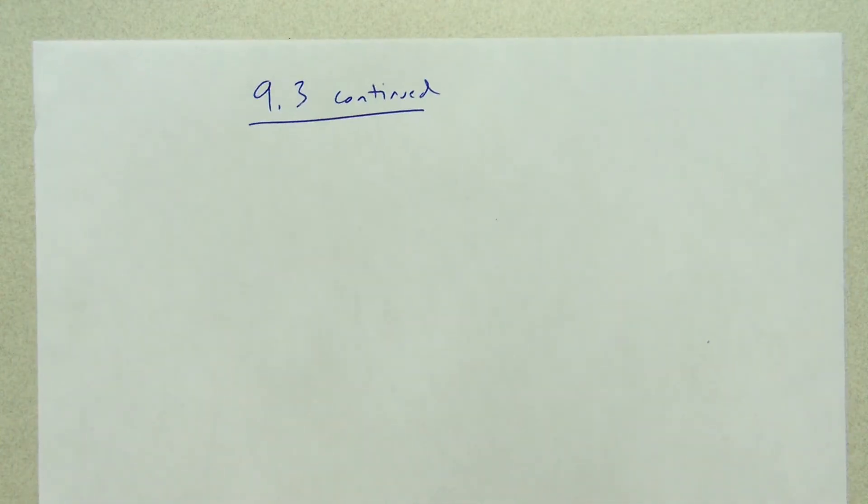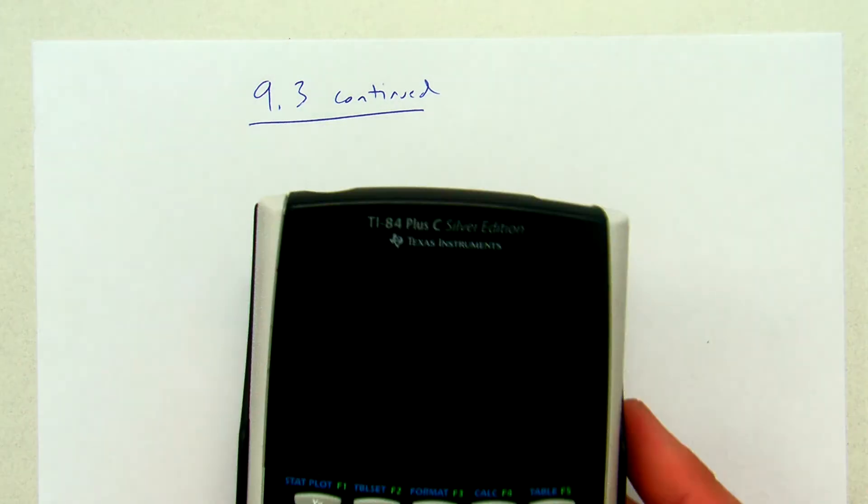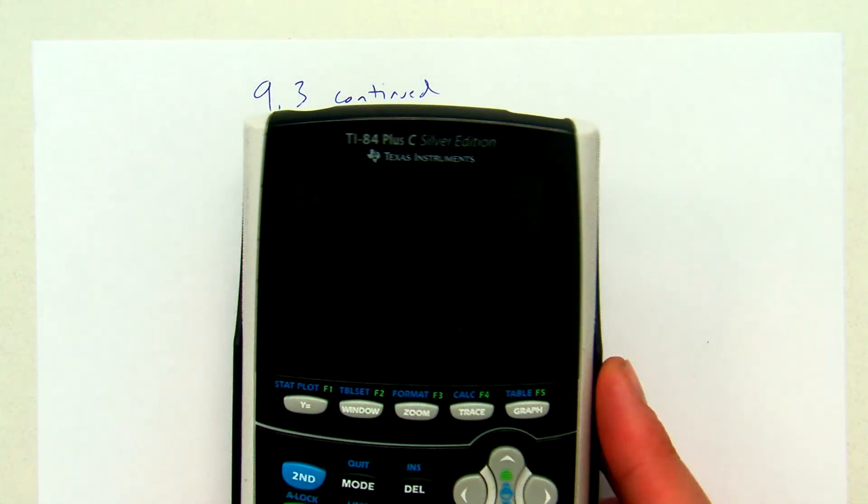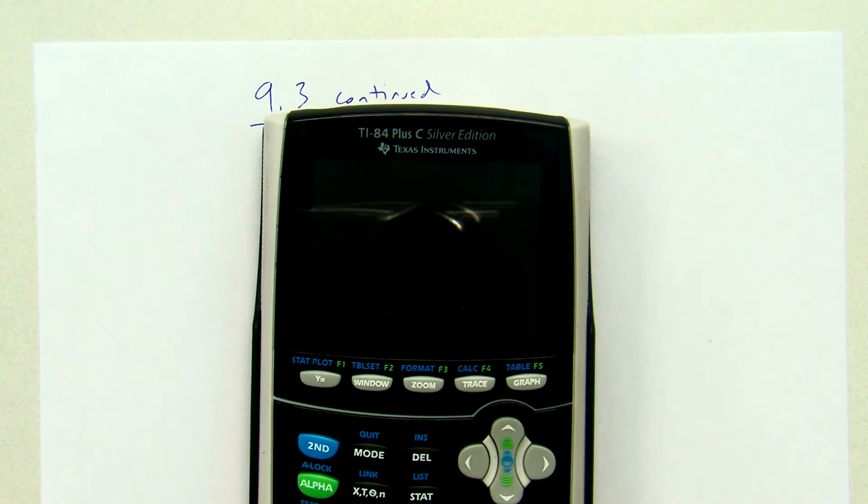This next video is going to be a little bit shorter and a little bit easier. We're going to be practicing using inverse trig functions on our calculator. We can only do inverse trig problems without a calculator if the number we're being given happens to be from a special right triangle like a 30-60-90 or a 45-45-90.